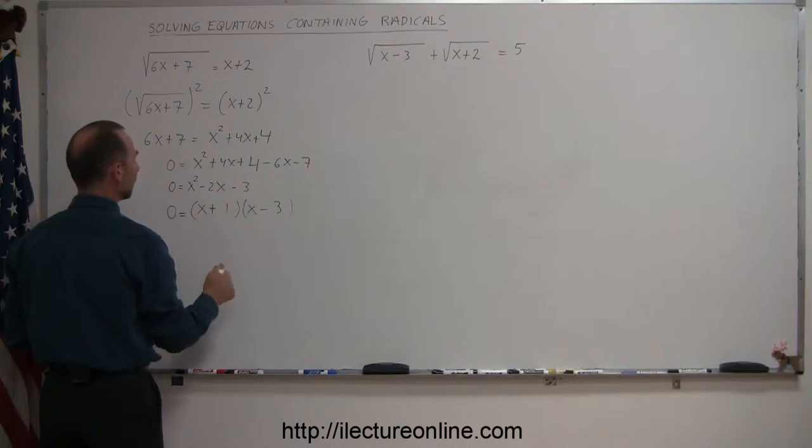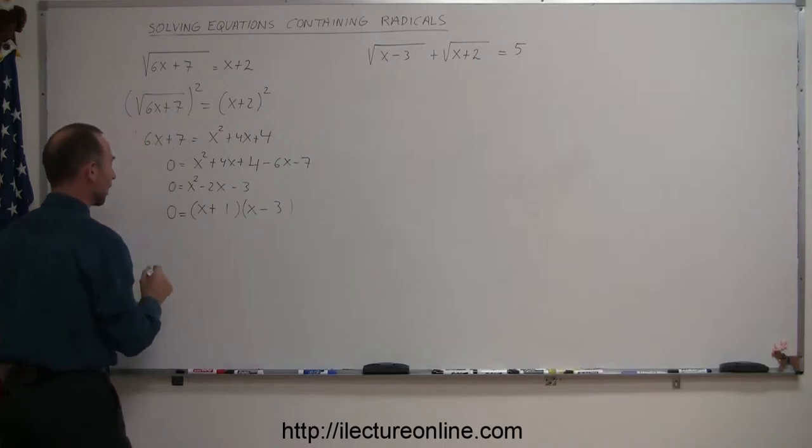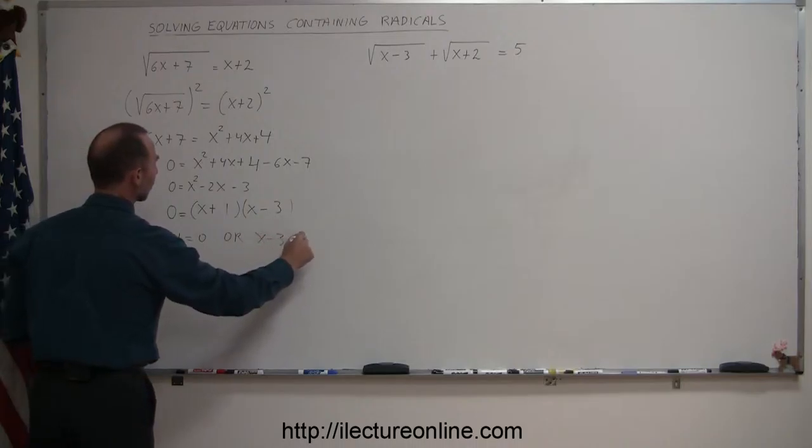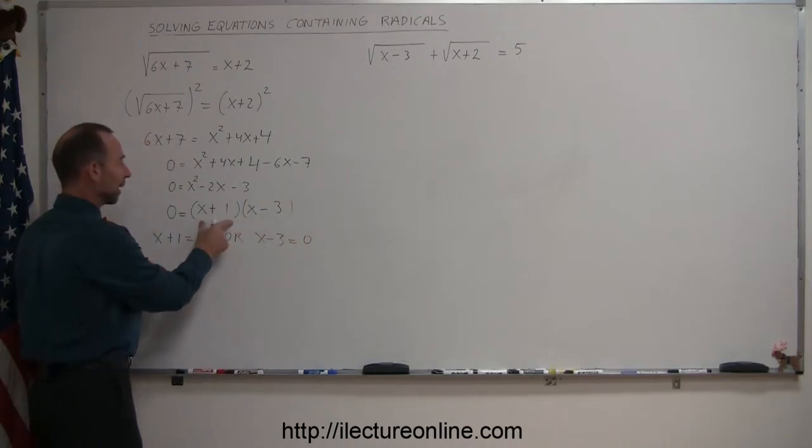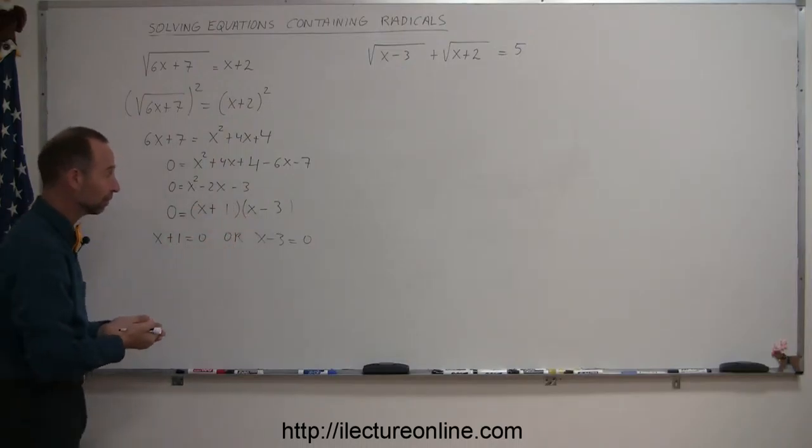The smallest, a 1. Notice if I add them together, I get a negative 2. If I multiply them together, I get a negative 3, so that's correct. And so that means that either x plus 1 equals 0 or x minus 3 equals 0. Remember that when you multiply two binomials together, you get 0. That means either the one or the other must equal 0.